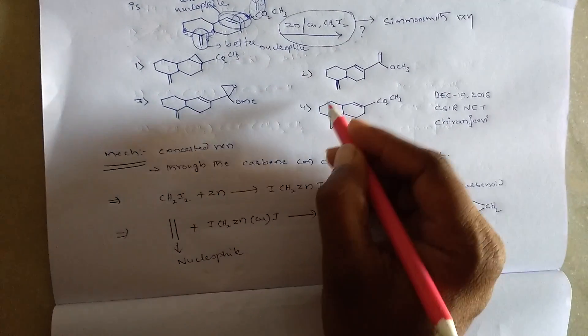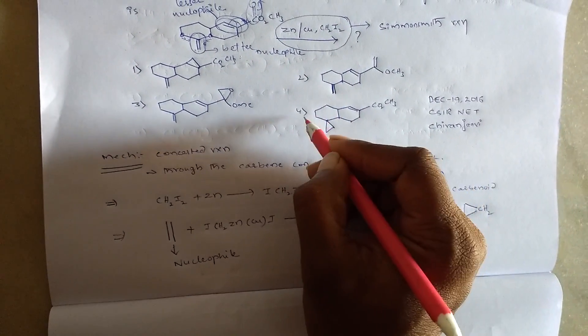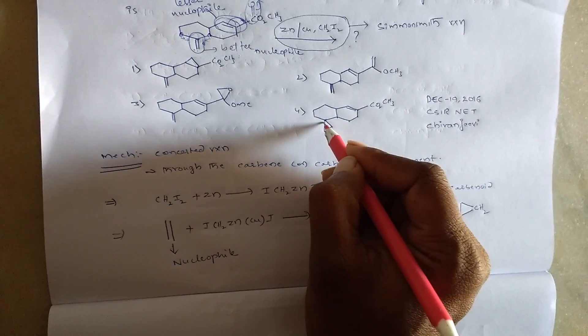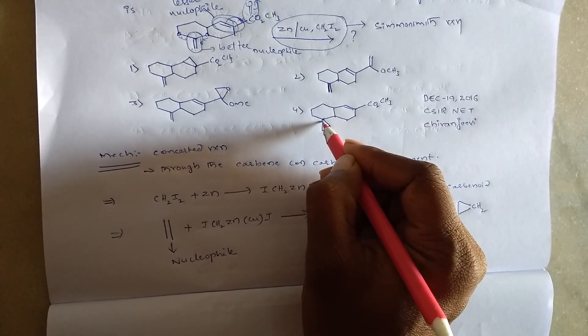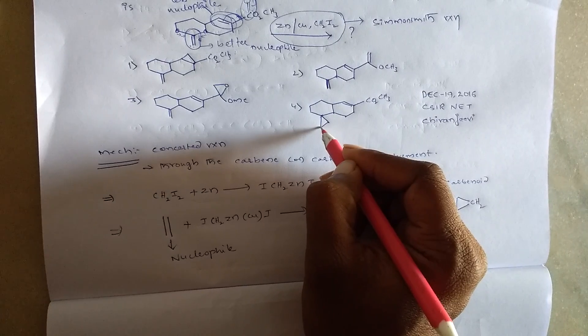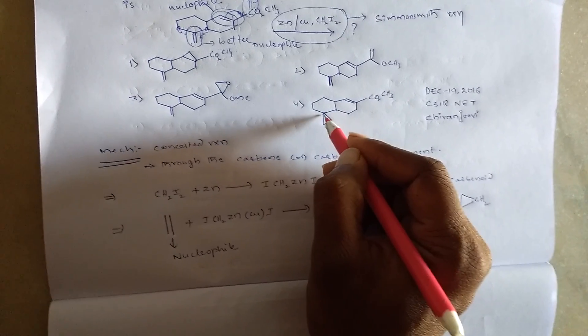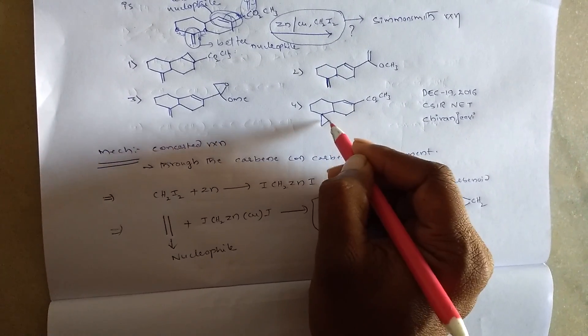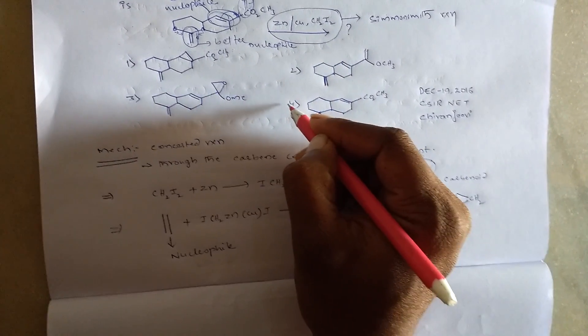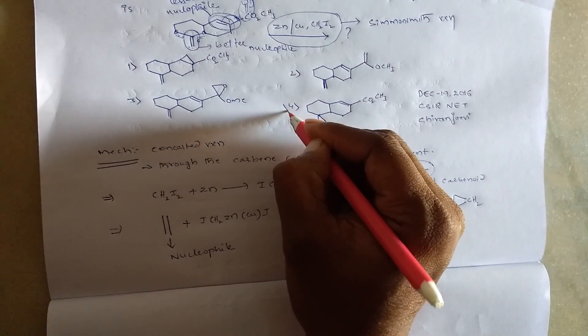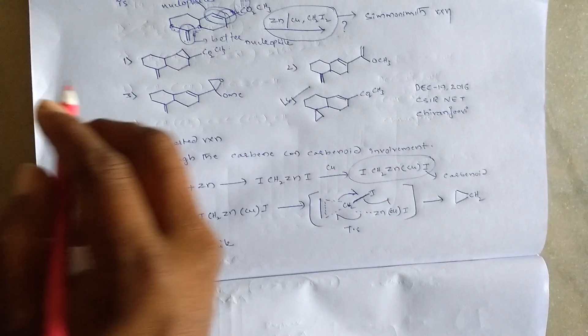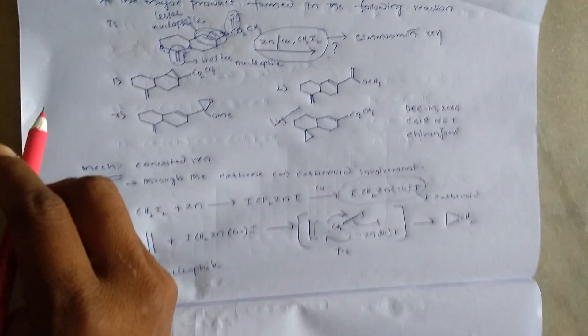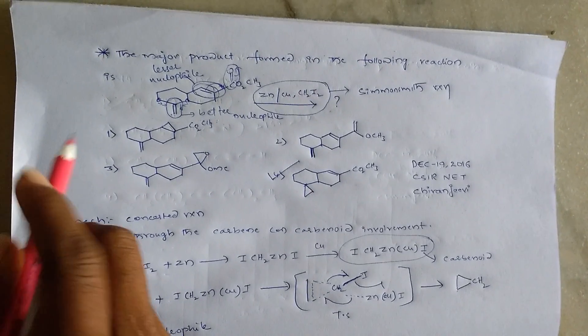So the answer is option four: cyclopropanation takes place on the exo-alkene ring. Option four is the correct answer for this question.